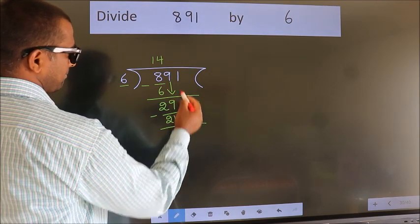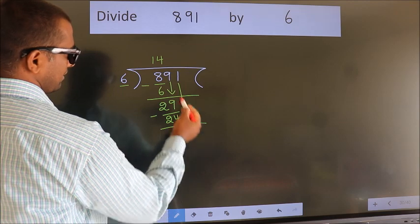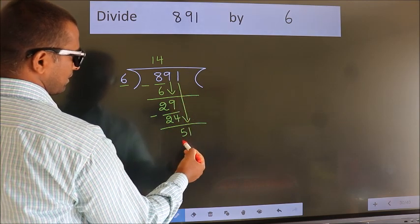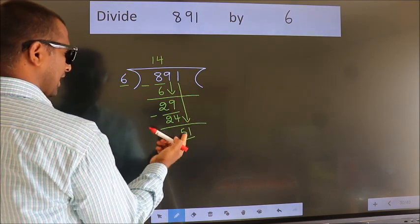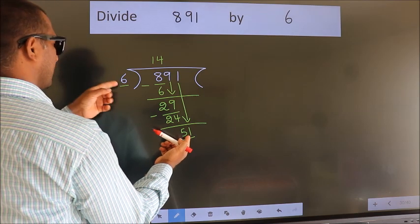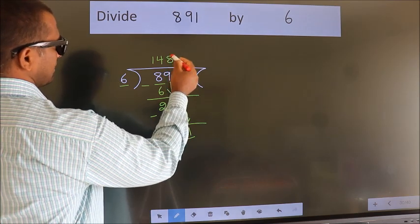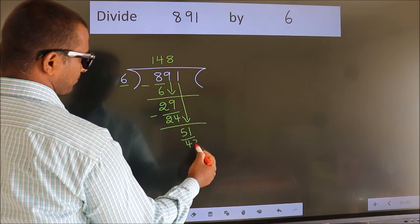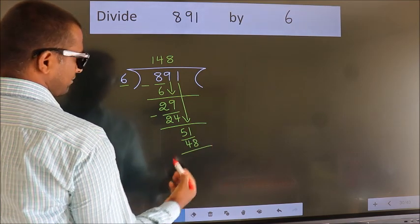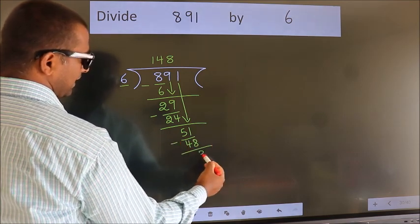After this, bring down the next number. So 1 down, making 51. A number close to 51 in the 6 table is 6×8=48. Now we subtract. We get 3.